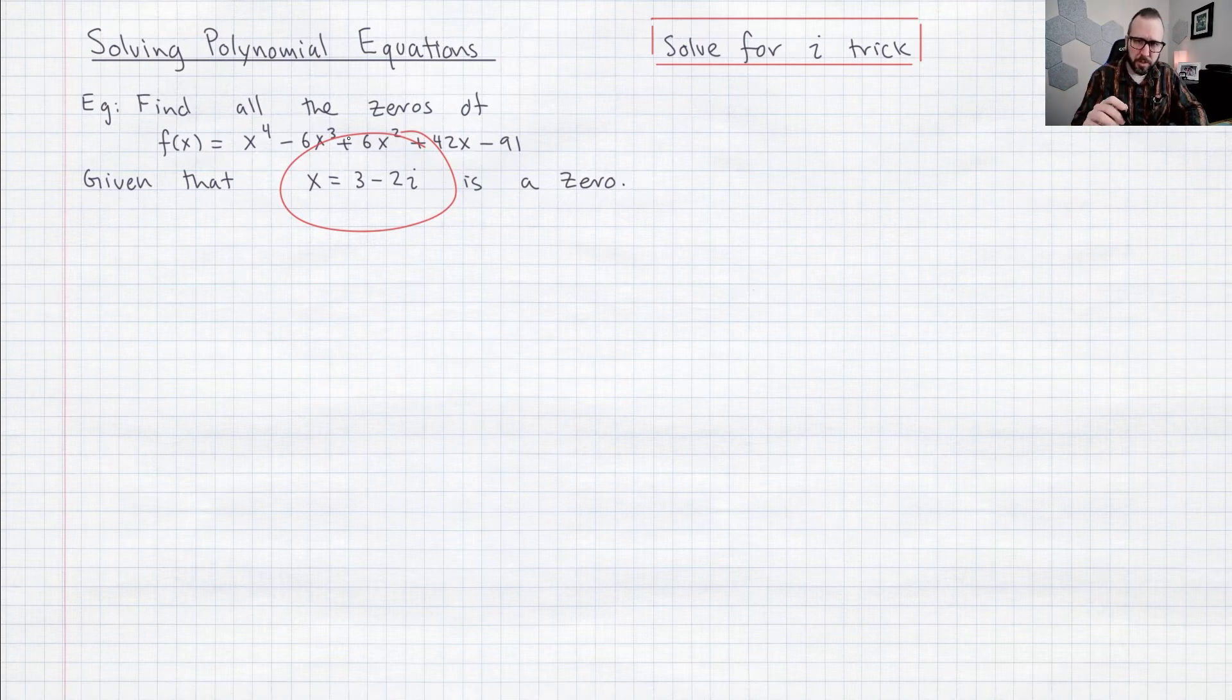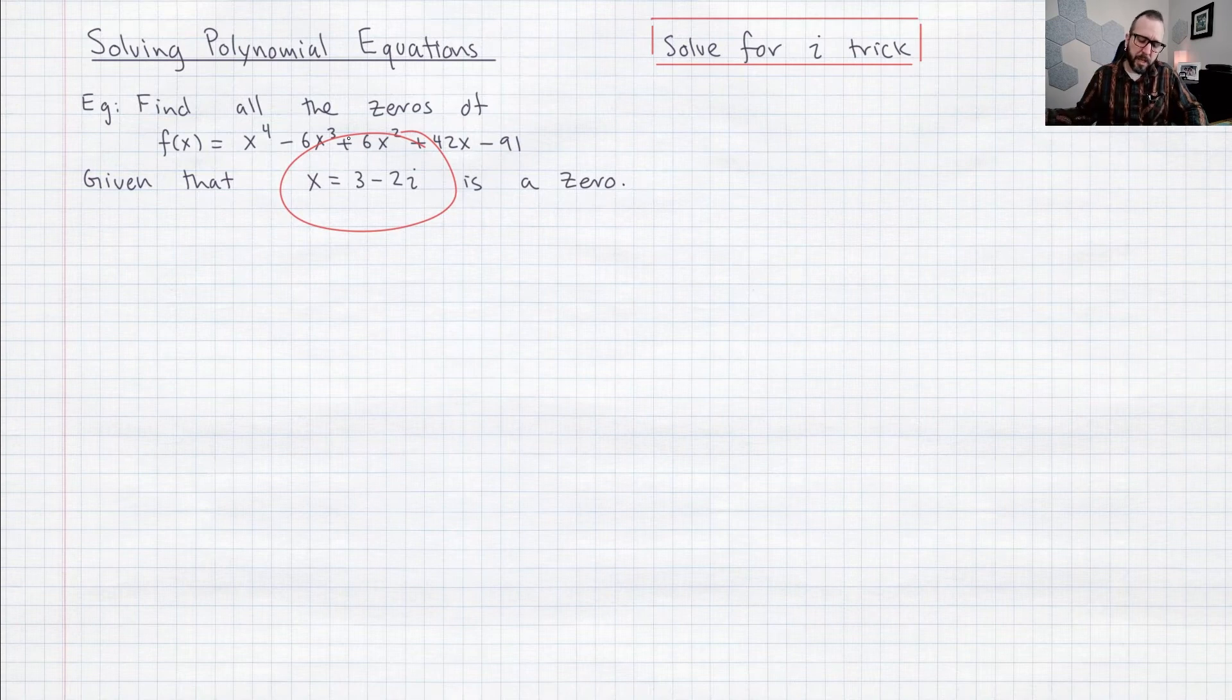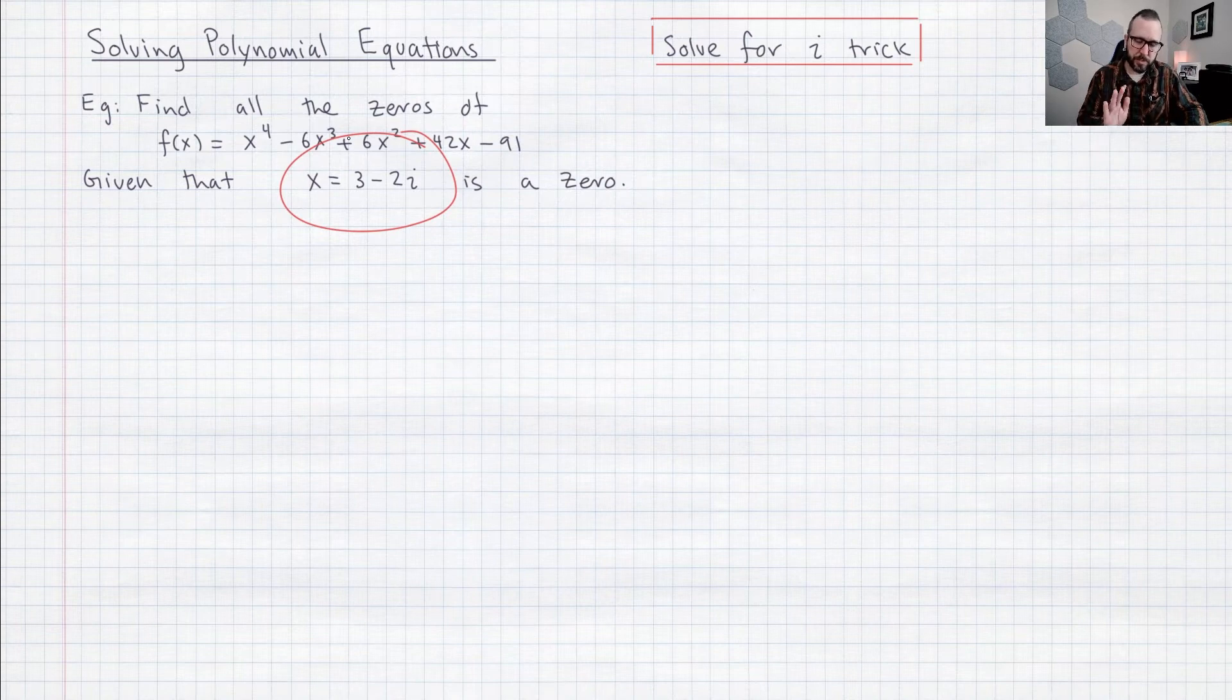So what I'm going to do is I want to show you this trick that I call the solve for i trick and what that's going to do is it's going to let us produce a factor of this polynomial that no longer has i's in it. It really makes it a lot easier so let me show you how it works.